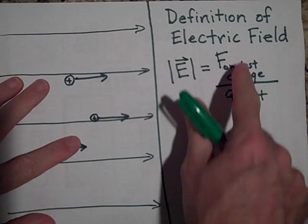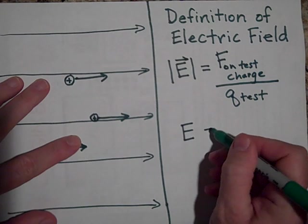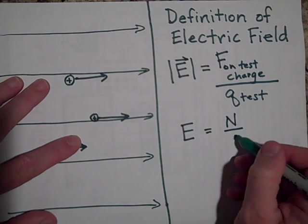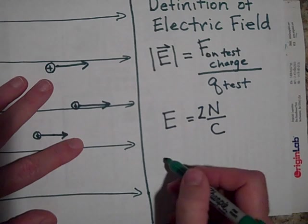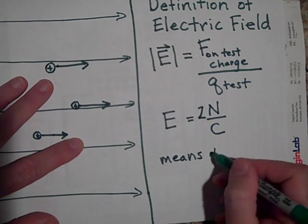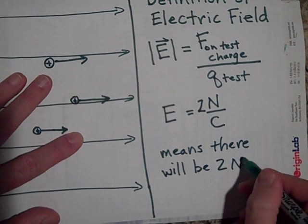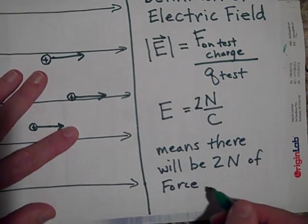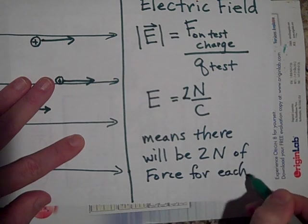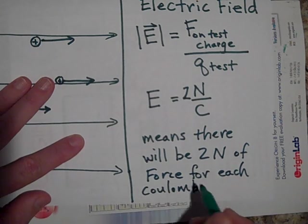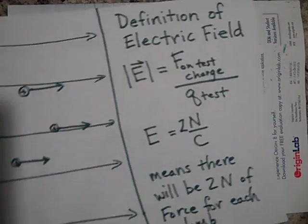Okay, so if you look, the units for this then, the units for electric field, it's going to be in the units for it are going to be newtons per coulomb. So if I told you that the field was two newtons per coulomb, that means there will be two newtons of force for every coulomb you put there placed at that point, whatever point we're talking about. So, okay, so that's the definition of the electric field.